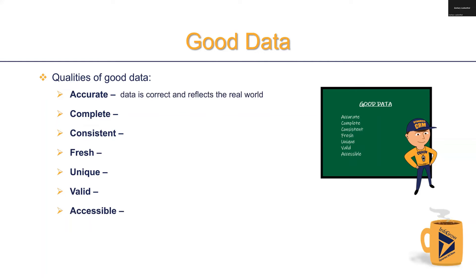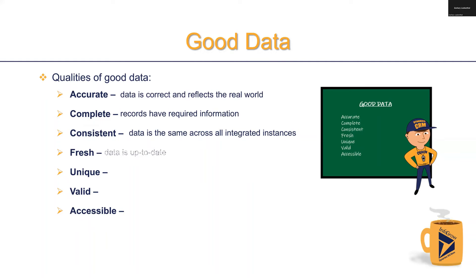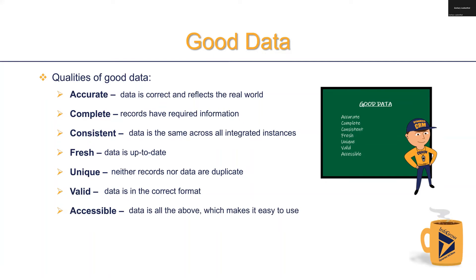Accurate data is data that is correct and reflects the real world. Data is complete if records have all required information. Data is consistent if it is the same across all integrated instances from software to databases. If your data is up to date, it's fresh. Good data must also be unique and should not contain any duplicates. Data is valid if it is correctly and consistently formatted. Lastly, if data is all the above and accessible, that makes it good data and easy to use.